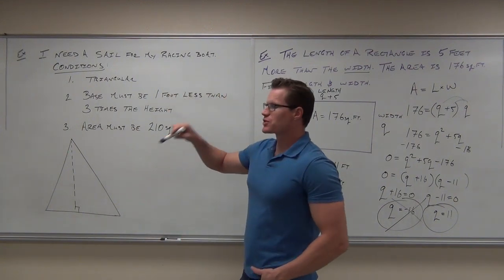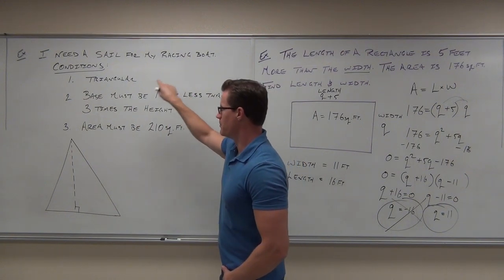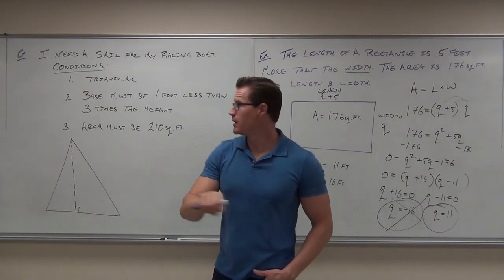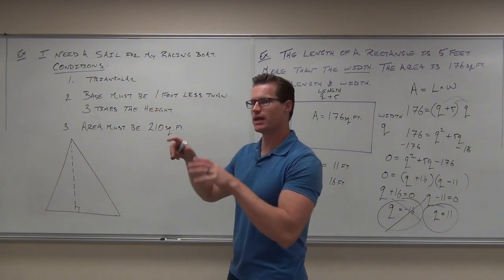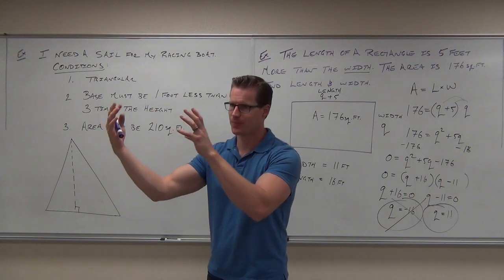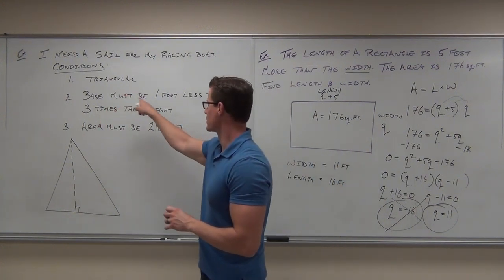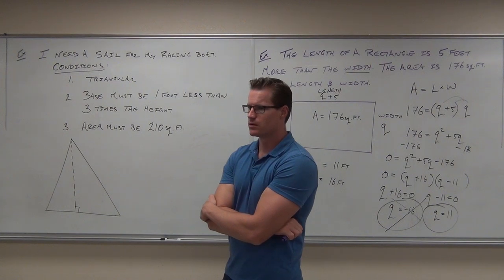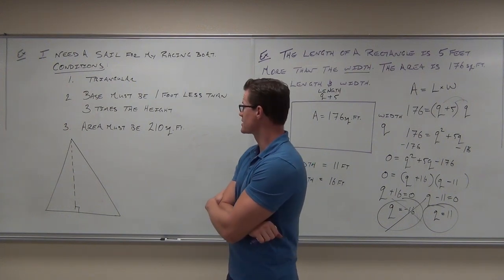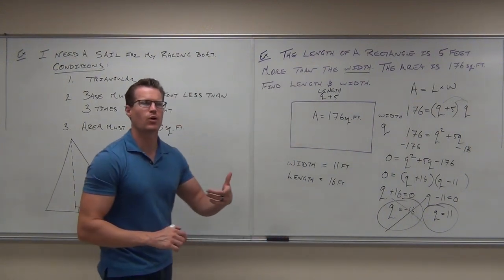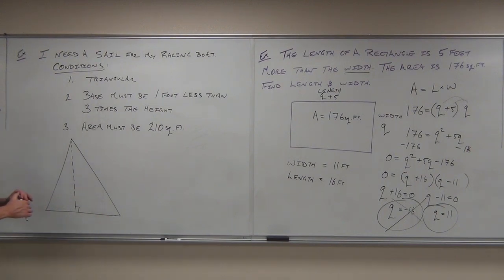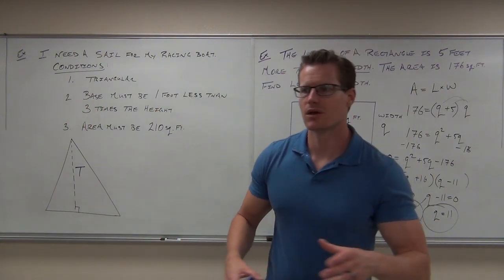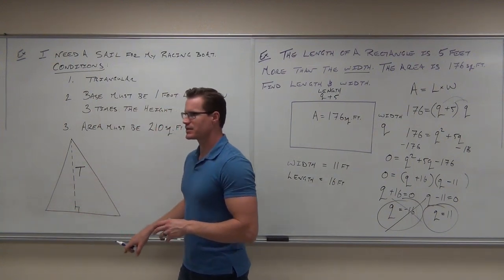The height goes straight up from the base. What's related off of what? Read it carefully: 'the base must be one foot less than three times the height.' The base is being defined in terms of the height. So call the height T. Since the base is based on the height, we can make an expression for the base related to T. 'One foot less than' with the word 'than' switches order, so it's: three times T, minus one. The base equals 3T minus 1.